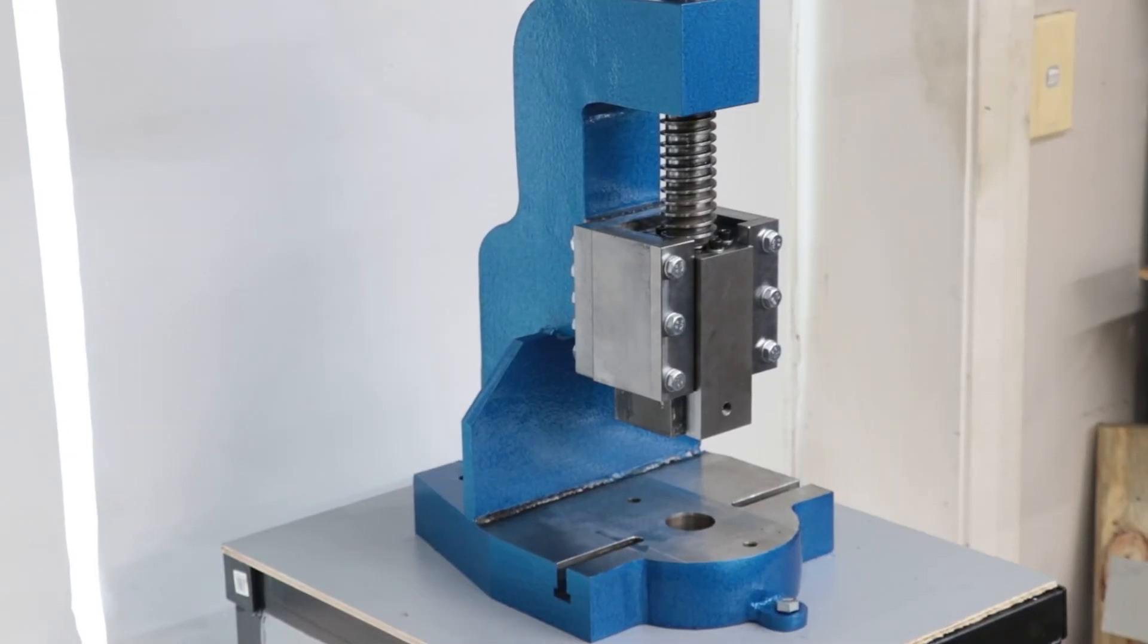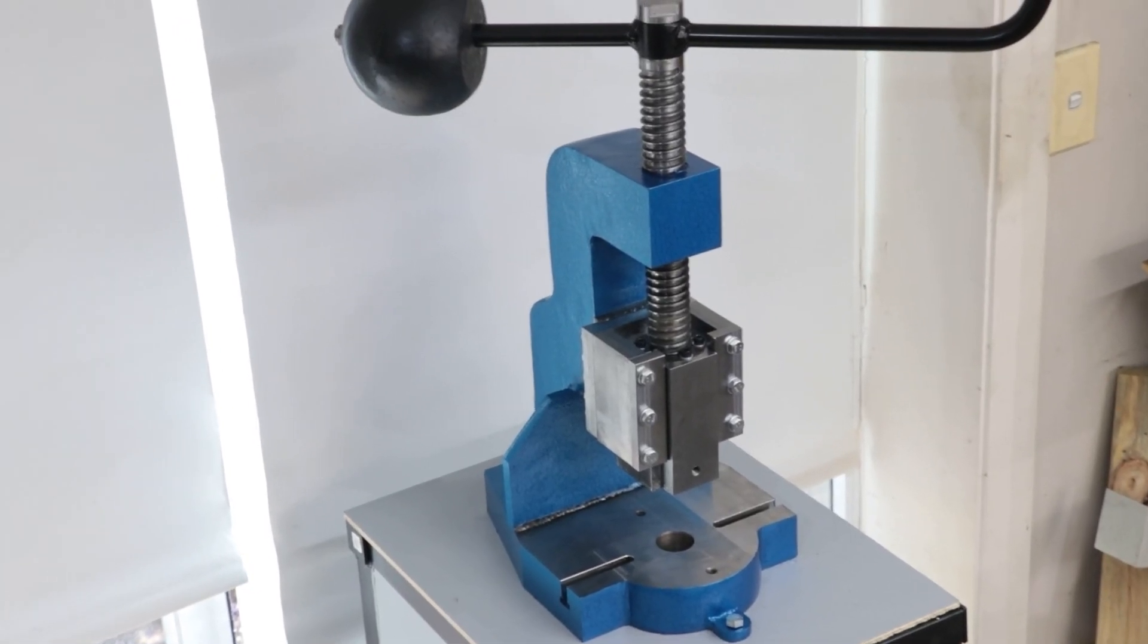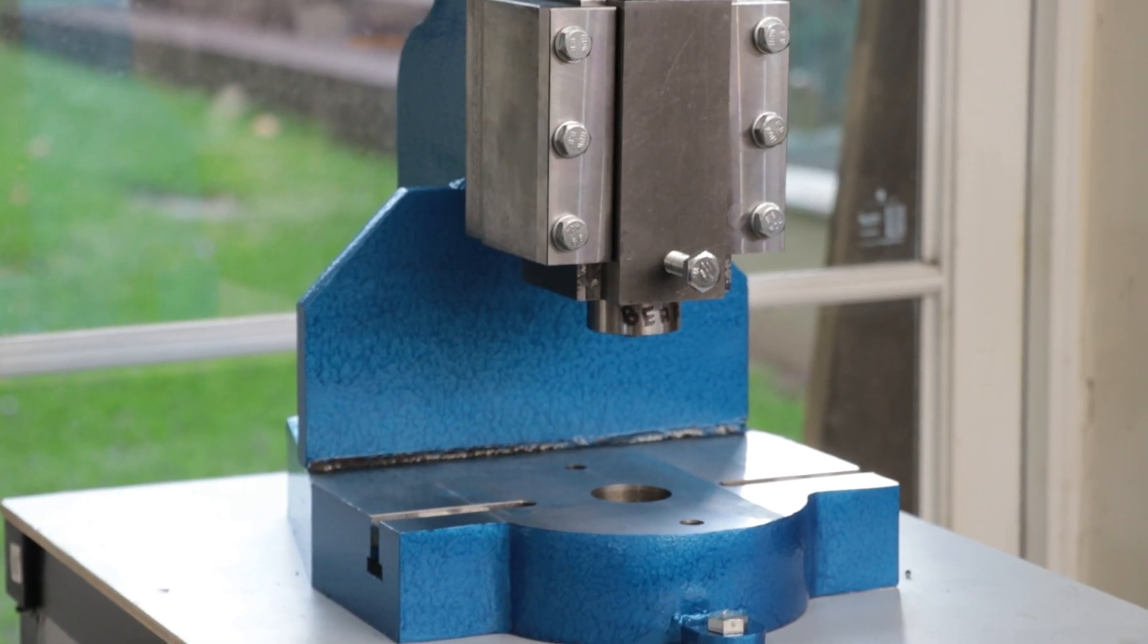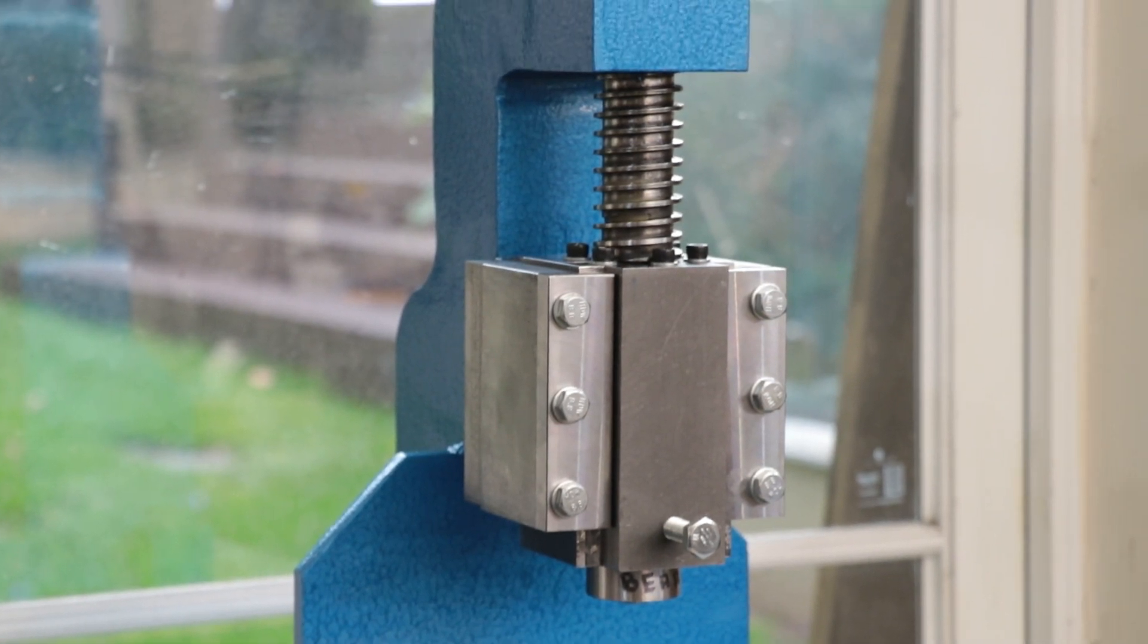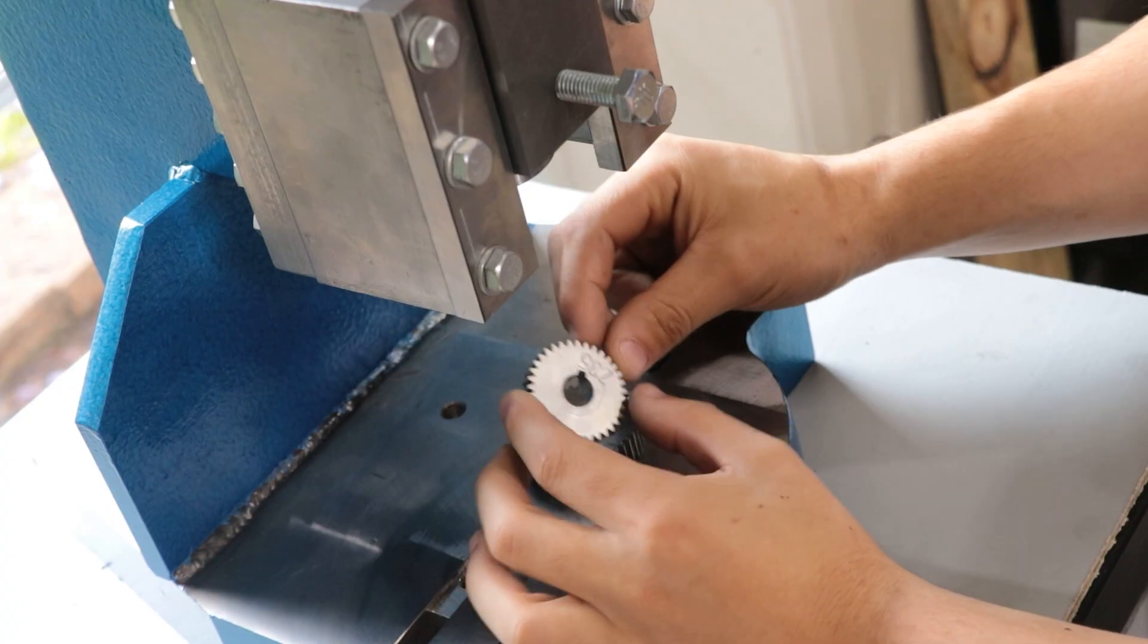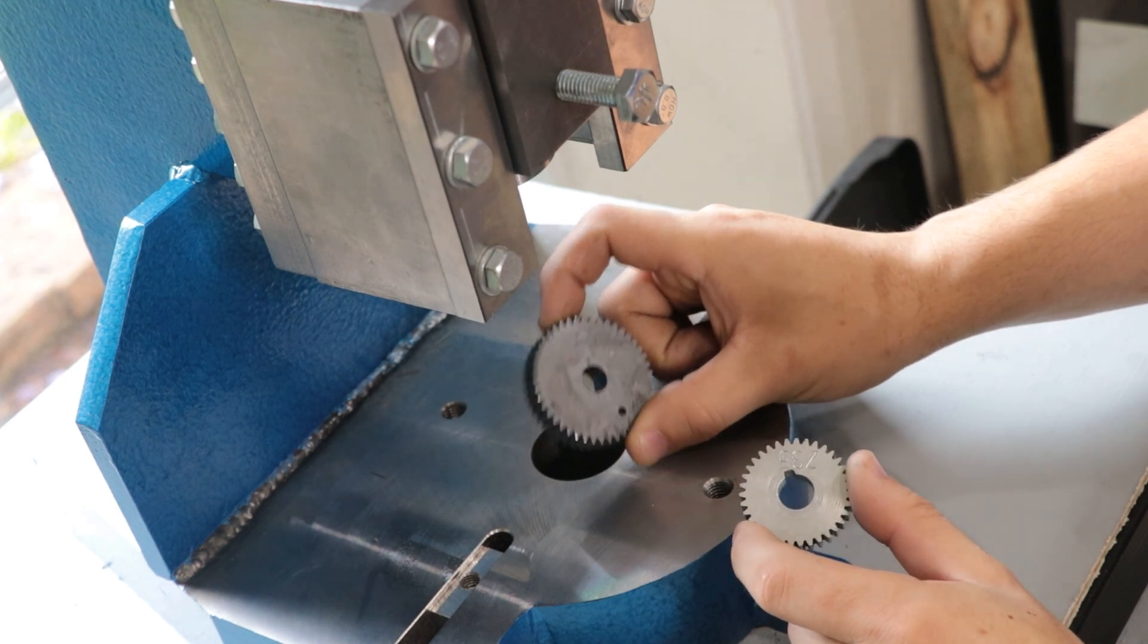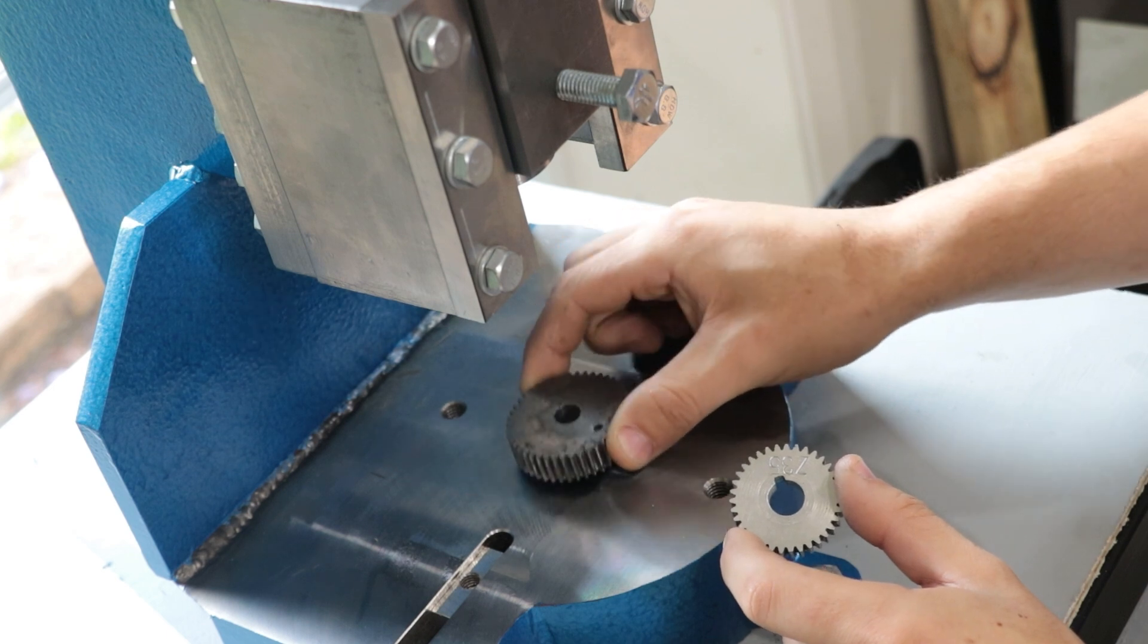But now that I have a press I can finally broach them. Is what I would say except for two issues. One, my three millimeter broach has yet to show up and two, a commercial five millimeter broach which I need for an upcoming project is too tall for this press. Thankfully though, the solution is quite simple. One, I simply wait for my broach to arrive and two, we make a custom five millimeter keyway broach.